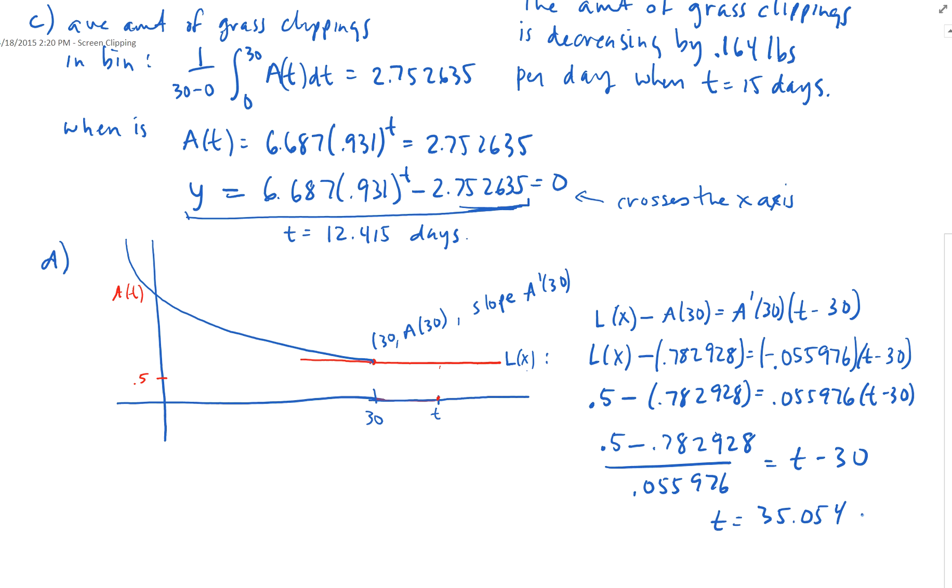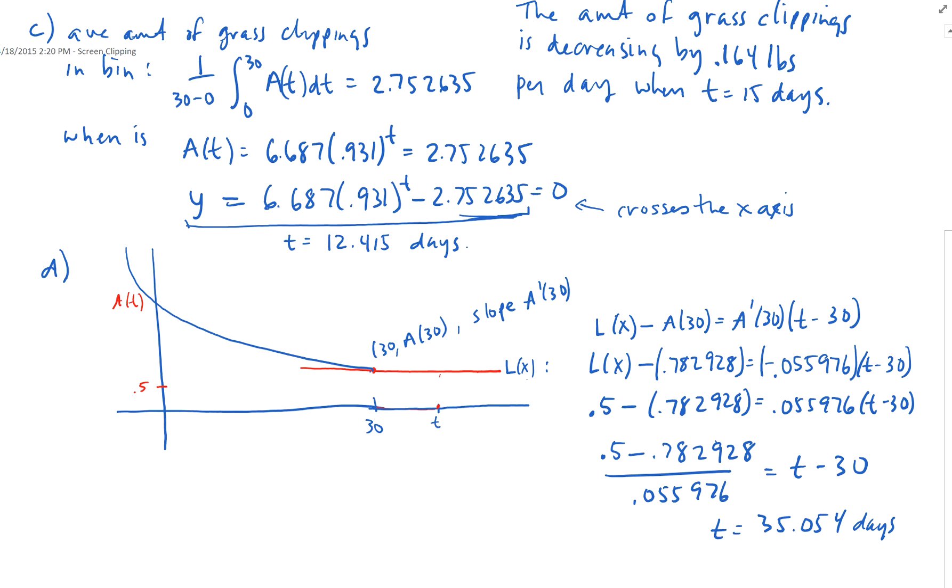So at 35.054 days, that's when there's 0.5 pounds of grass clippings in there.